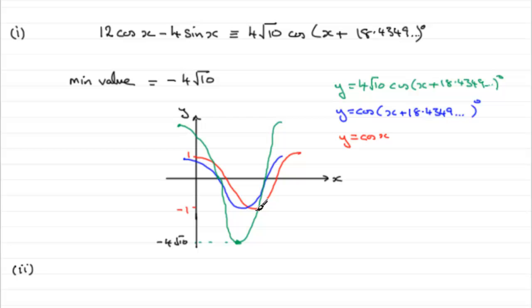It's going to be based around this value here on the red graph. Remember, this bottomed out at 180 degrees. Then we shifted it left by 18.43 odd degrees. So what we've got to do to get this value here, the first positive value of x that this minimum occurs...